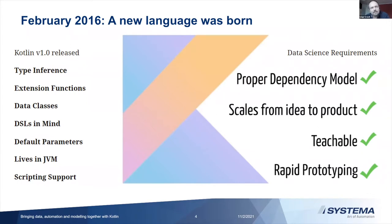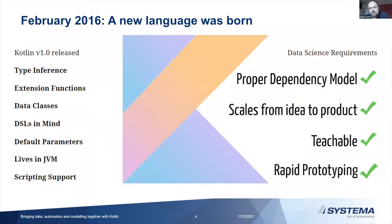When I looked at Kotlin's feature list from February 2016, there were so many exciting things: type inference, extension functions, nice constructs for data classes, DSL design support, default parameters, and some scripting support. It also solved dependency management problems — pip or conda environments are not as evolved as a Gradle file. I also liked the scaling approach: as a statically typed language I can scale more complex domain models much more easily compared to a scripting approach.